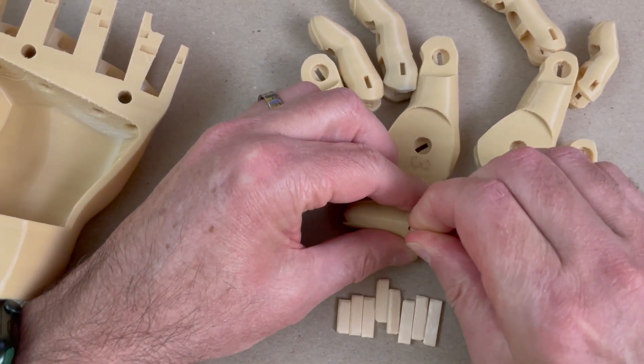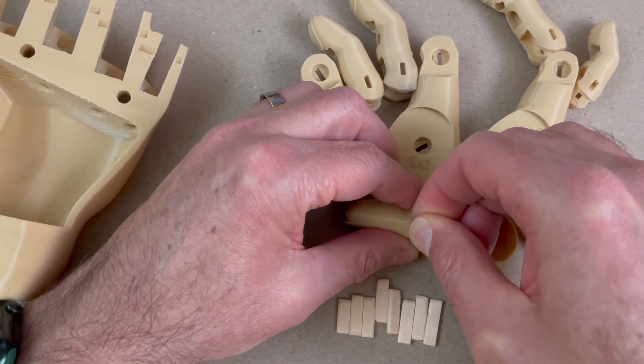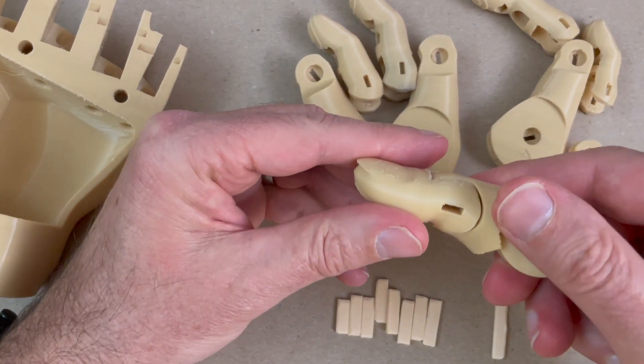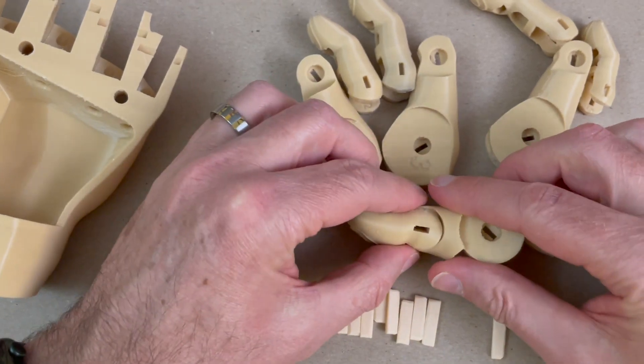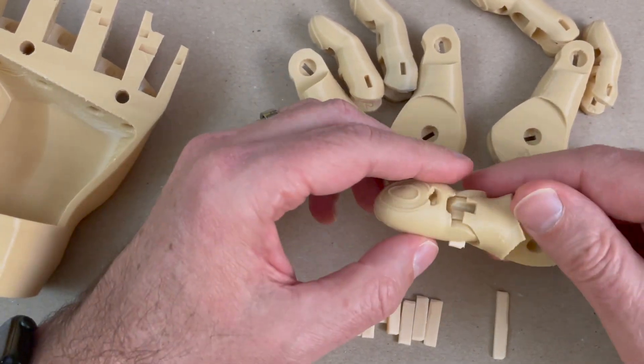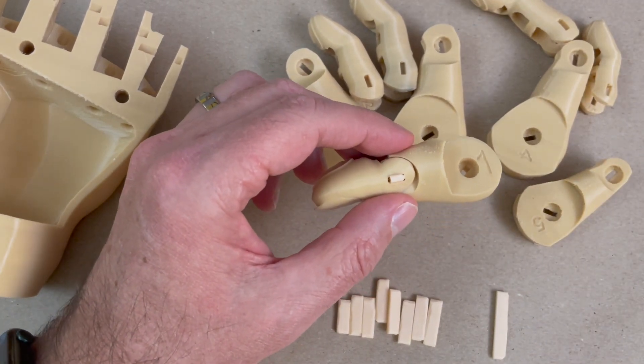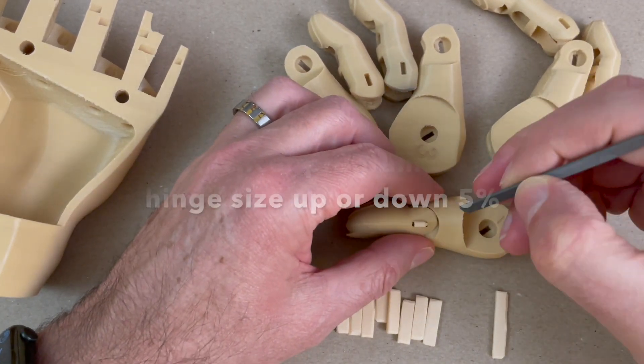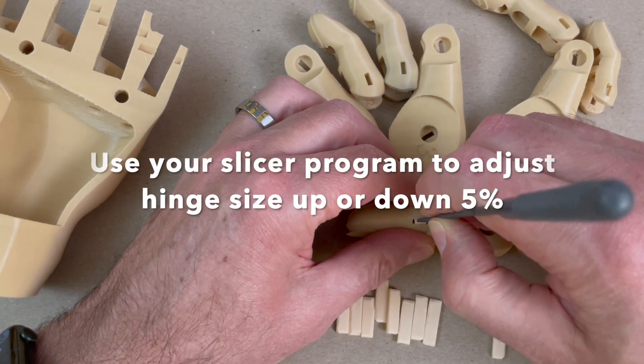If I didn't say in the printing section, but printing these hinges is a little tricky. The humidity in the room, various things, just makes the print slightly different every time. So if it doesn't fit just right, you might end up printing these hinges more than once, just to get them to fit snug, but not too snug. So they should be snug so they don't fall out, but they should also slide in relatively easily.